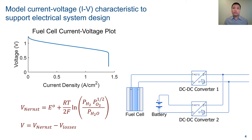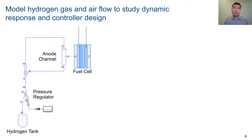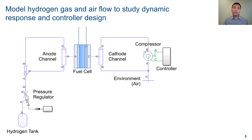This model lets you iterate quickly because you do not need to worry about the gas flow, humidity, and heat dissipation. When you decide to investigate in more depth, you can then add more details. The first step is to add the fluid network for the hydrogen from the fuel tank to the anode, and the fluid network for the air mixture from the environment to the cathode. You will also need to add the stoichiometric equations to the fuel cell block to model the consumption of hydrogen and oxygen and the production of water vapor.